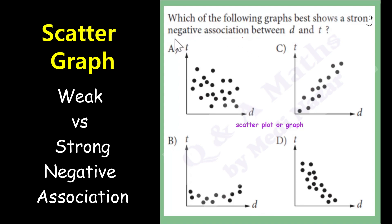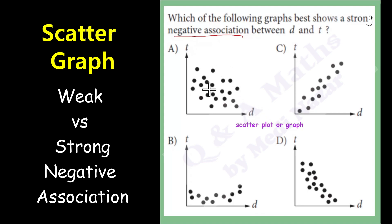We say that there is a negative association between two variables when one variable increases while the other one decreases. We can see that relationship in letter A and letter D.